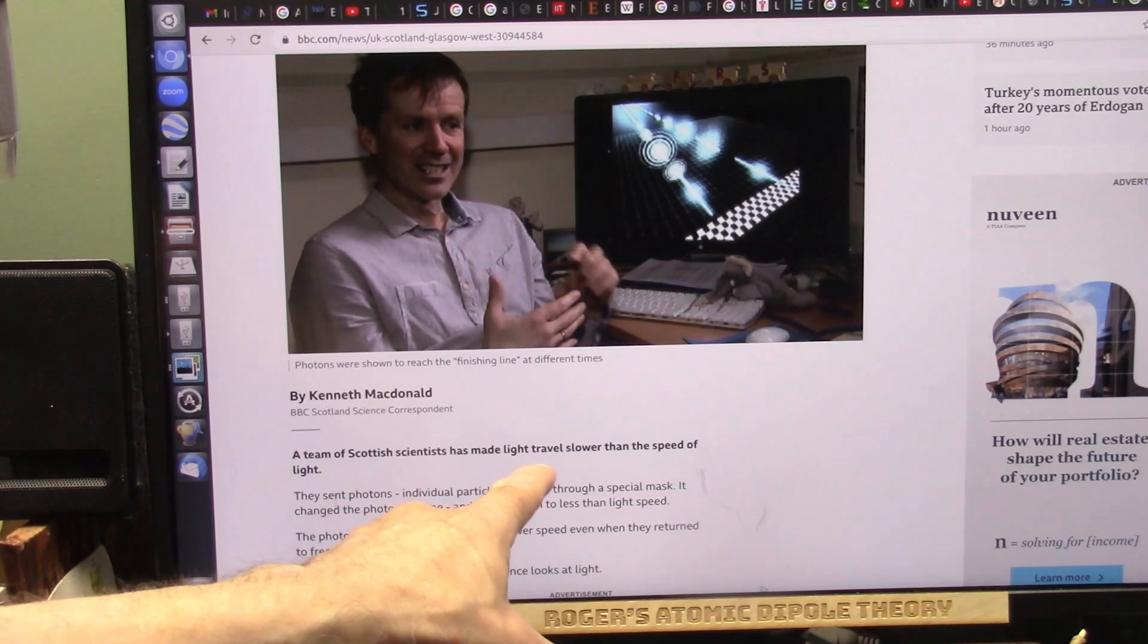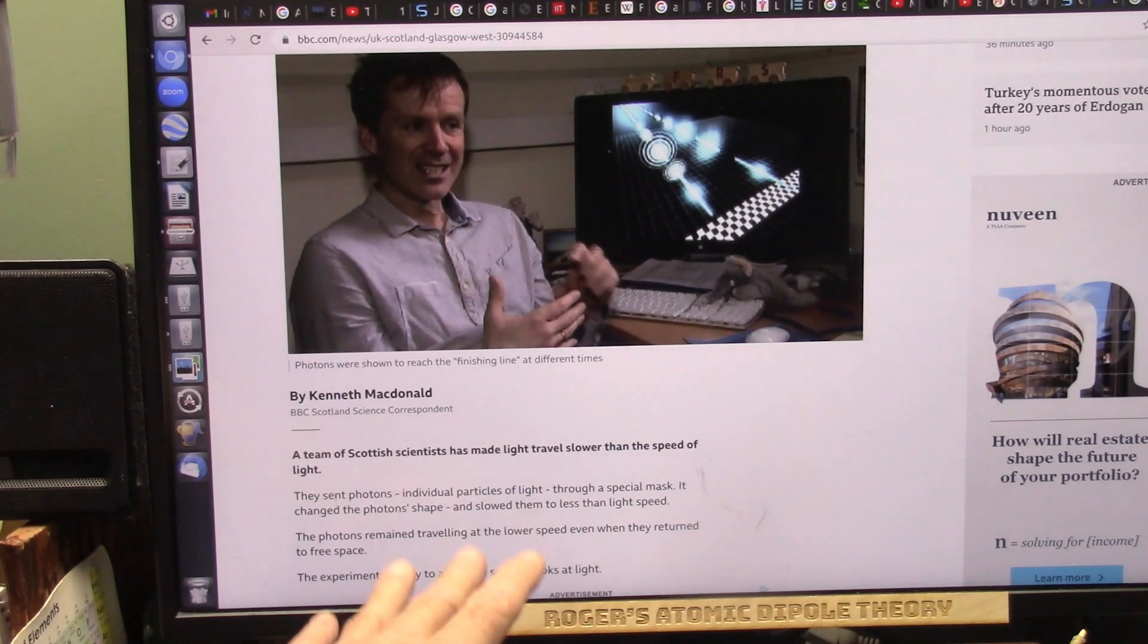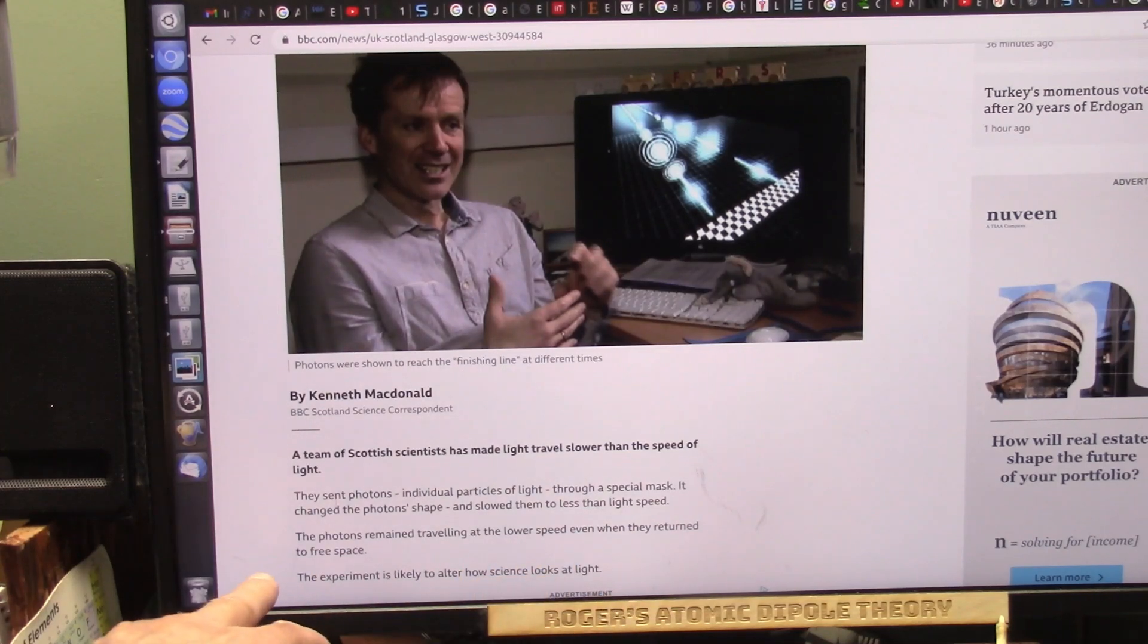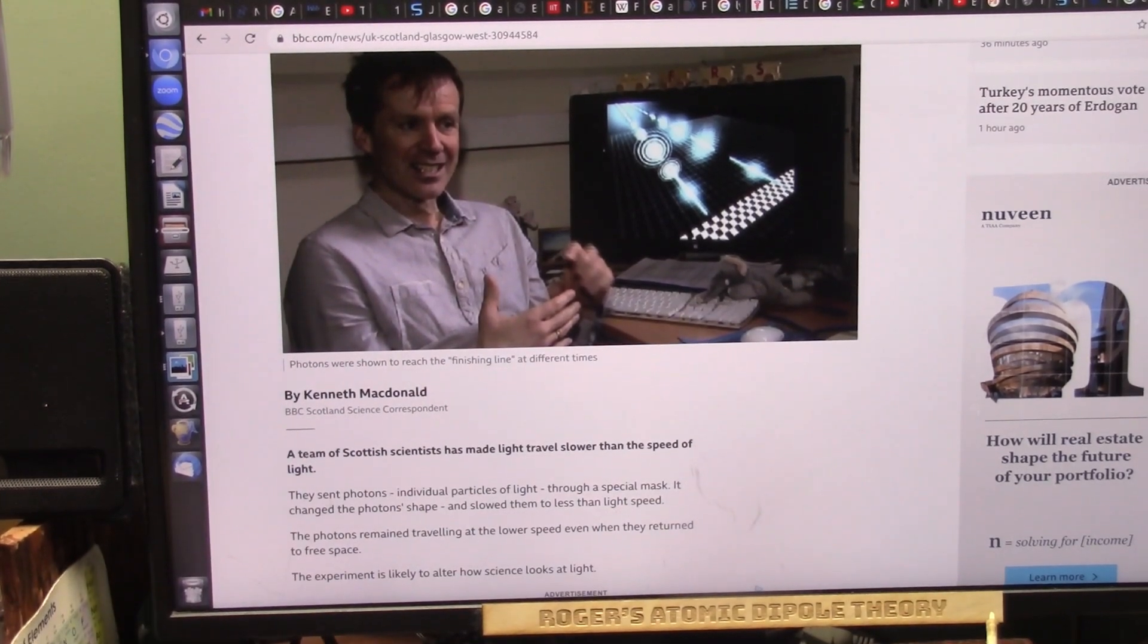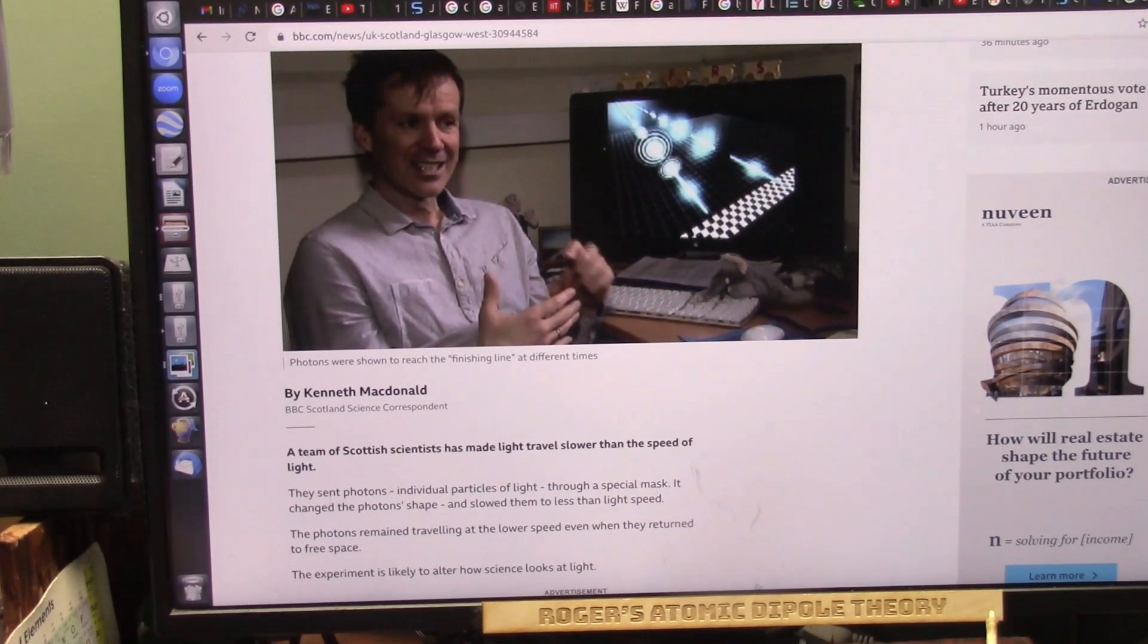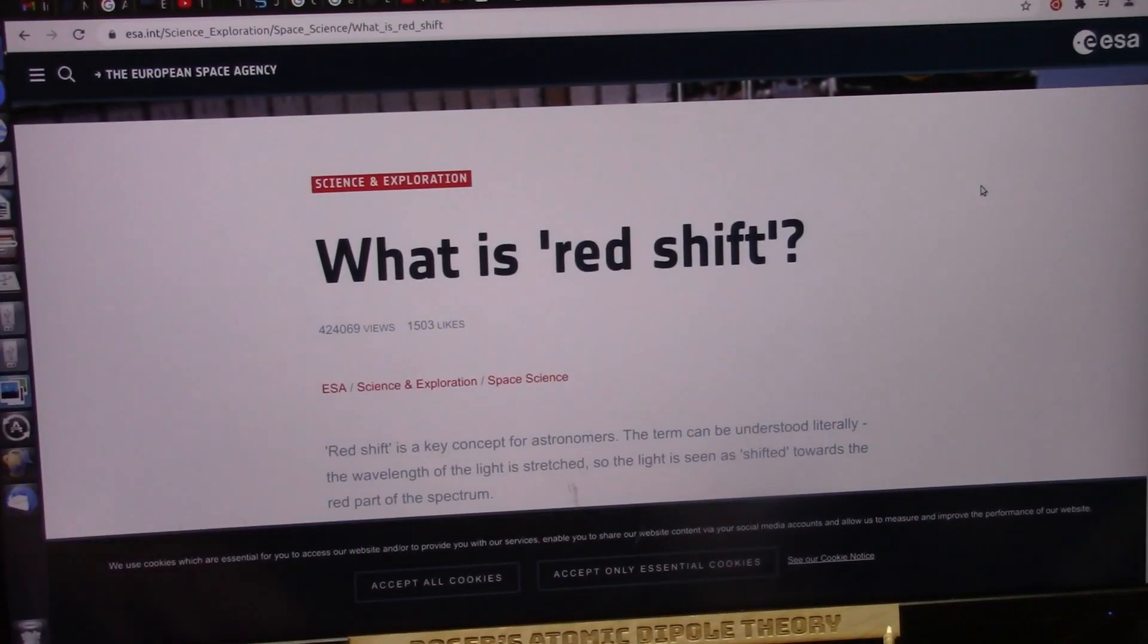This is the reality of the situation. Nobody ever tested it to see if it was right because Einstein said it. A team of Scottish scientists made light travel slower than the speed of light. They sent it through a mask, and then the photons remained traveling at the lower speed even when they returned to free space. The experiment is likely to alter how science looks at light. No, it won't, because the scientists will not even look at this. The truth in science is a farce. It's strictly presenting a point of view, an opinion, and then supporting it with as much nonsense as you can possibly splatter on top.